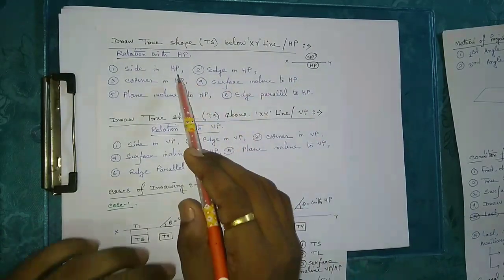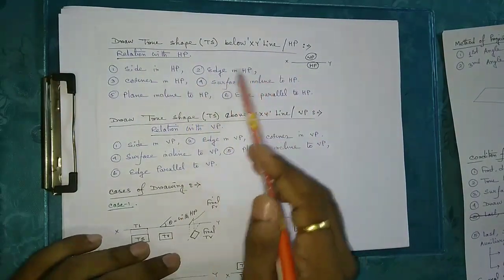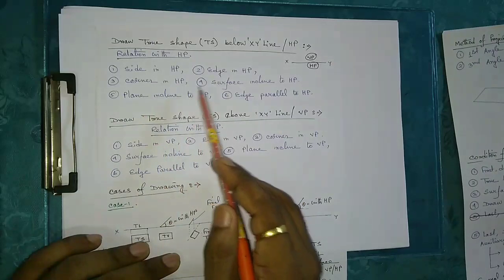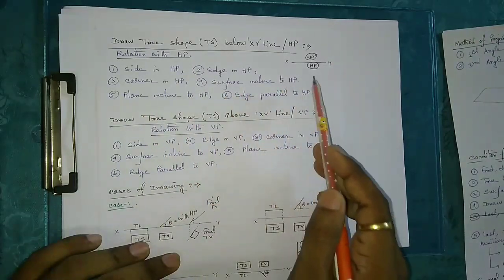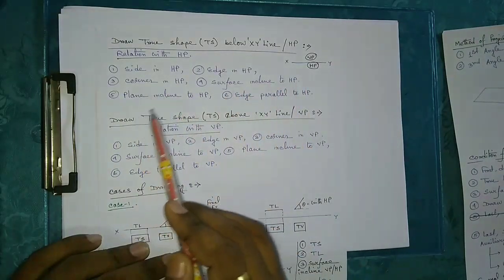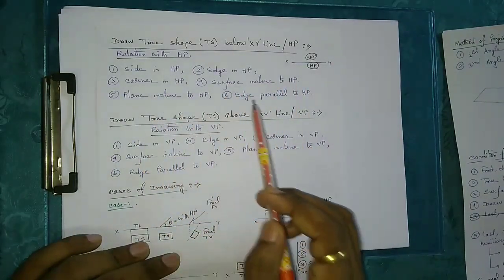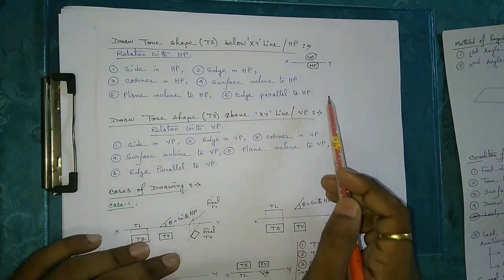That means for all HP conditions — side in HP, edge in HP, corner in HP, surface inclined to HP, plane inclined to HP, and edge inclined to HP — the true shape is drawn below the XY line.